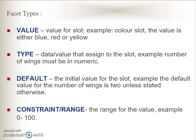A facet is metadata to describe the attributes. We have values — there is a value for each attribute or slot. We also have type, where you can assign what is the type for that slot: numeric, characters, or alphanumeric. There is also a default value for each slot or attribute, and a range or constraint for each slot.